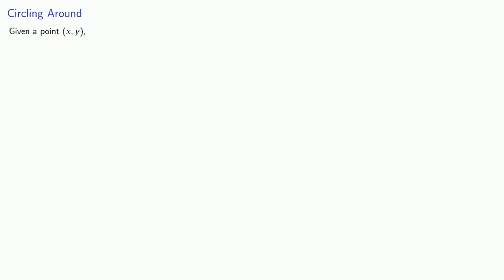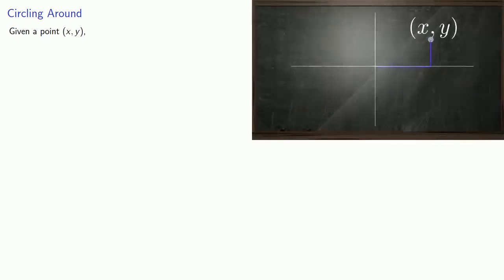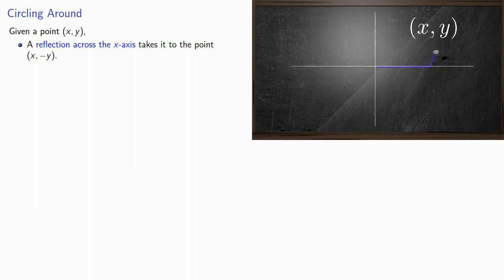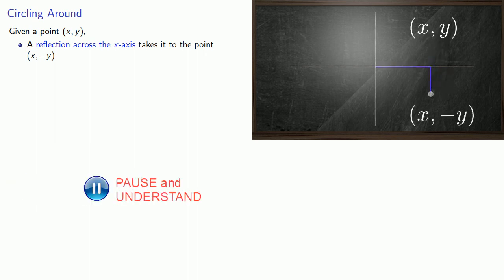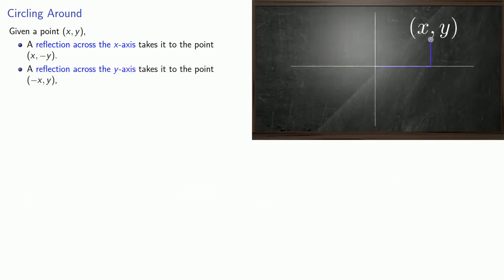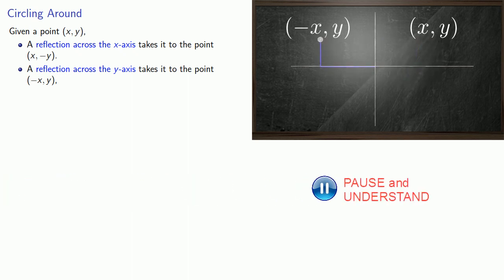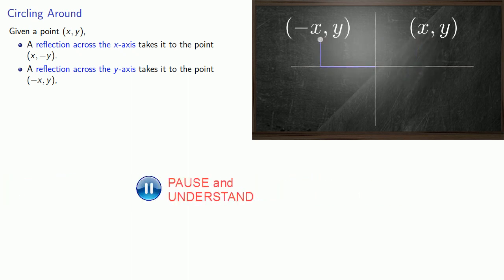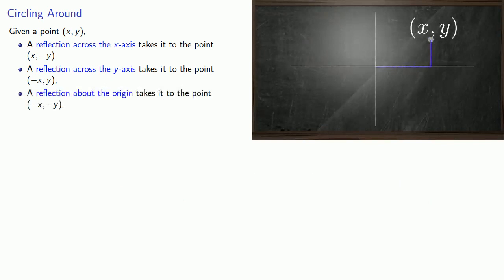Given a point (x, y), a reflection across the x-axis will take it to the point with coordinates (x, -y). Likewise, if we reflect it across the y-axis, we go to the point (-x, y). And a reflection across the origin will take us to the point with coordinates (-x, -y).